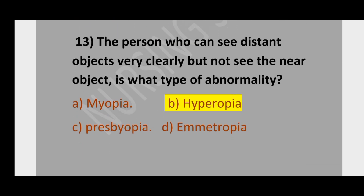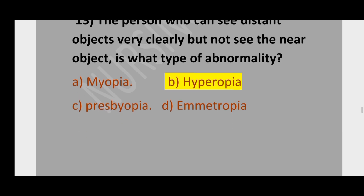Question number 13. The person who can see distant objects very clearly but cannot see near objects — what type of abnormality is this? Option A, myopia; option B, hyperopia; option C, presbyopia; option D, ametropia. The correct option is hyperopia.